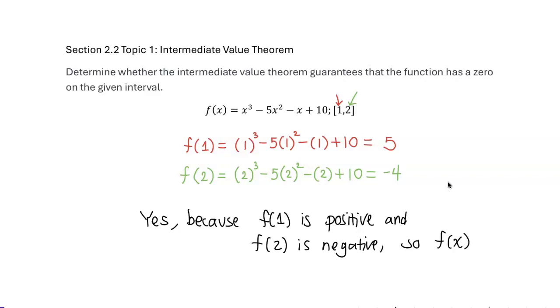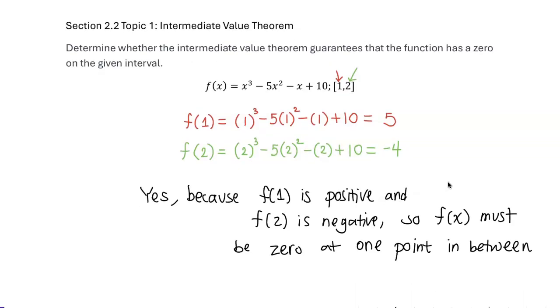So f(x) must be zero at one point, at some point, in between x equals 1 and x equals 2.